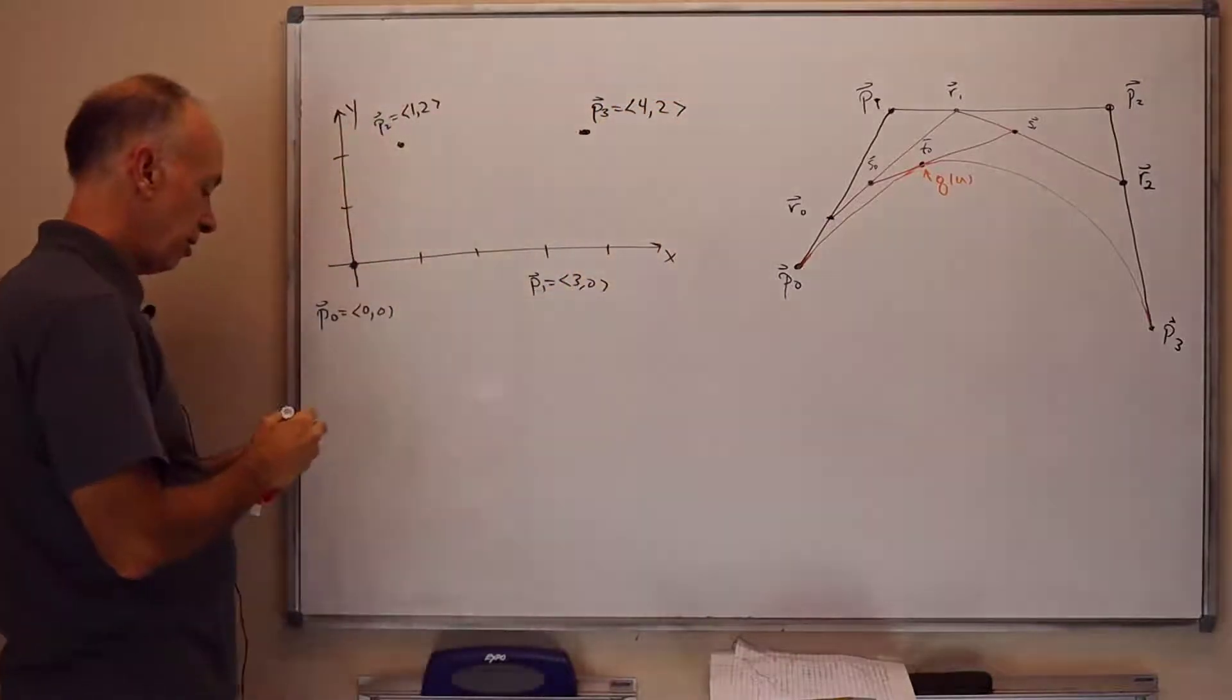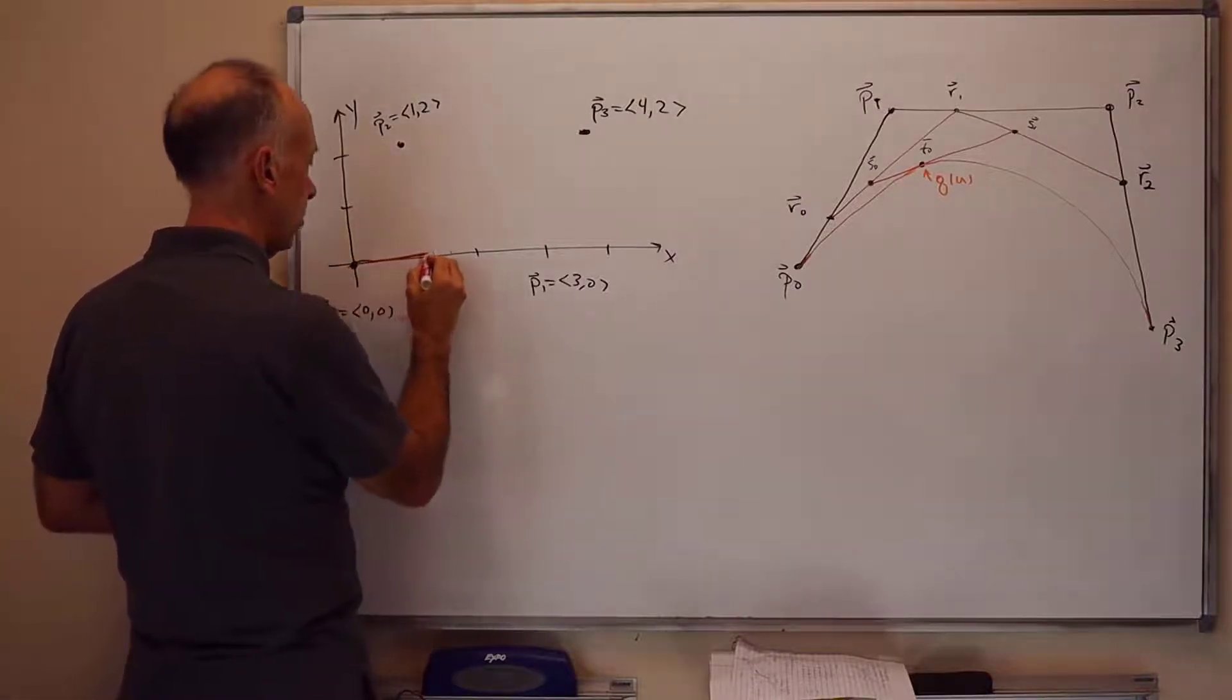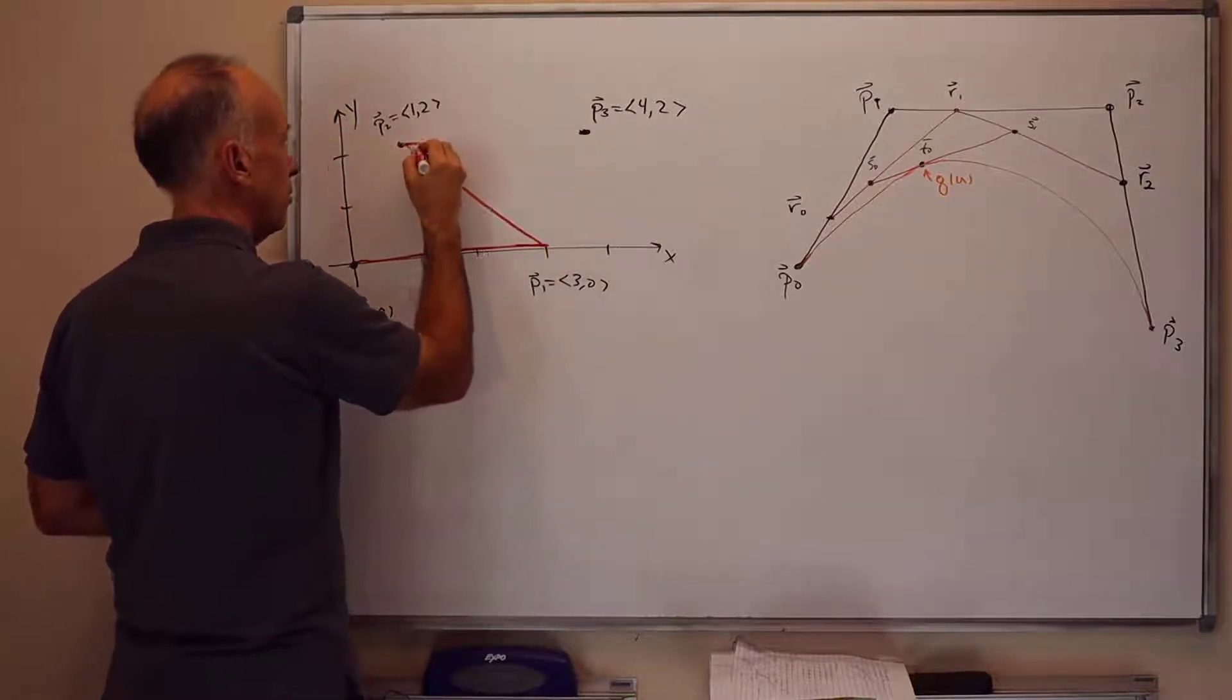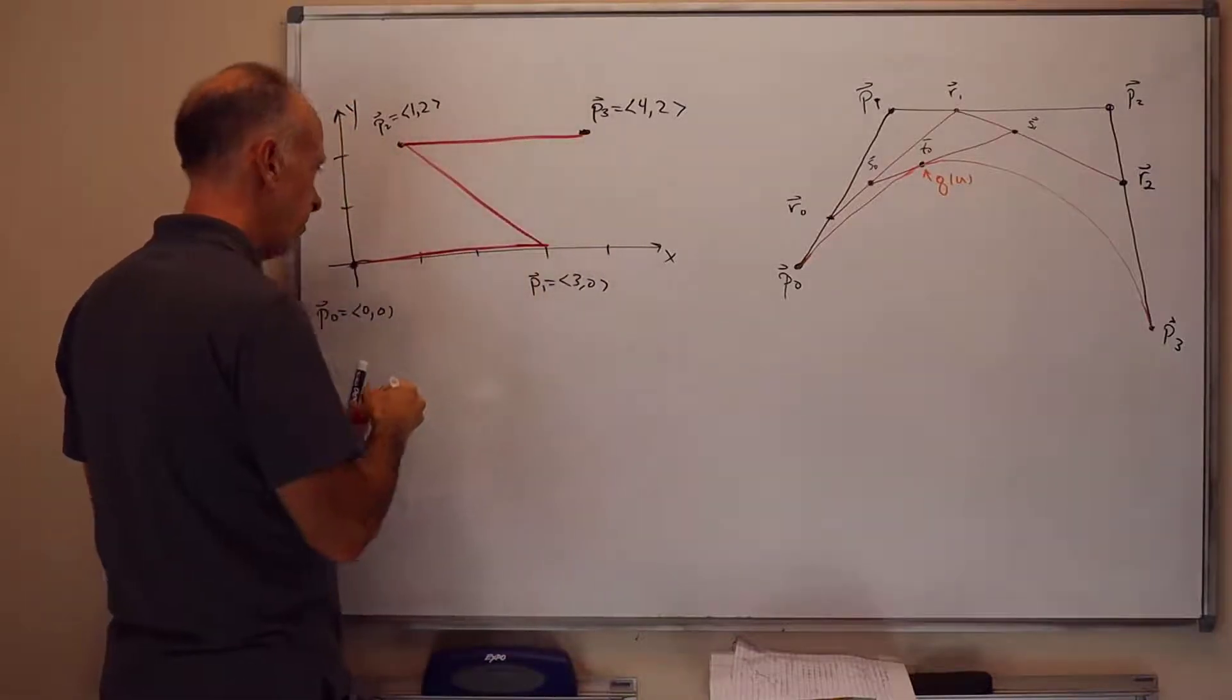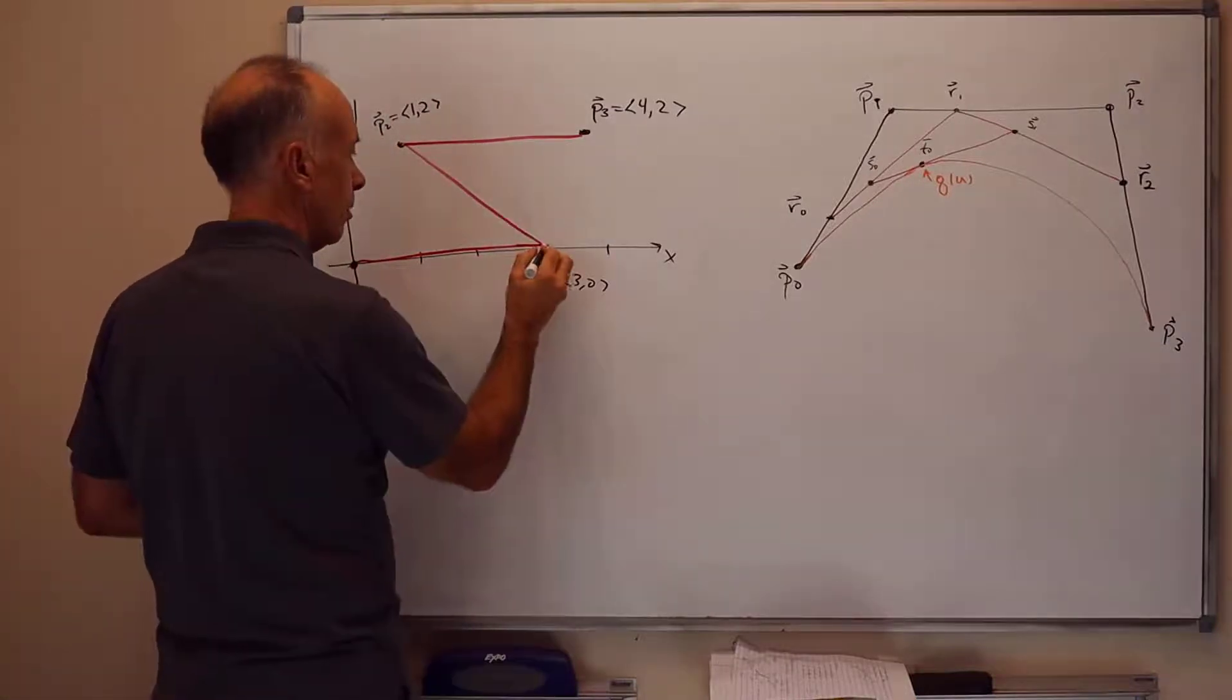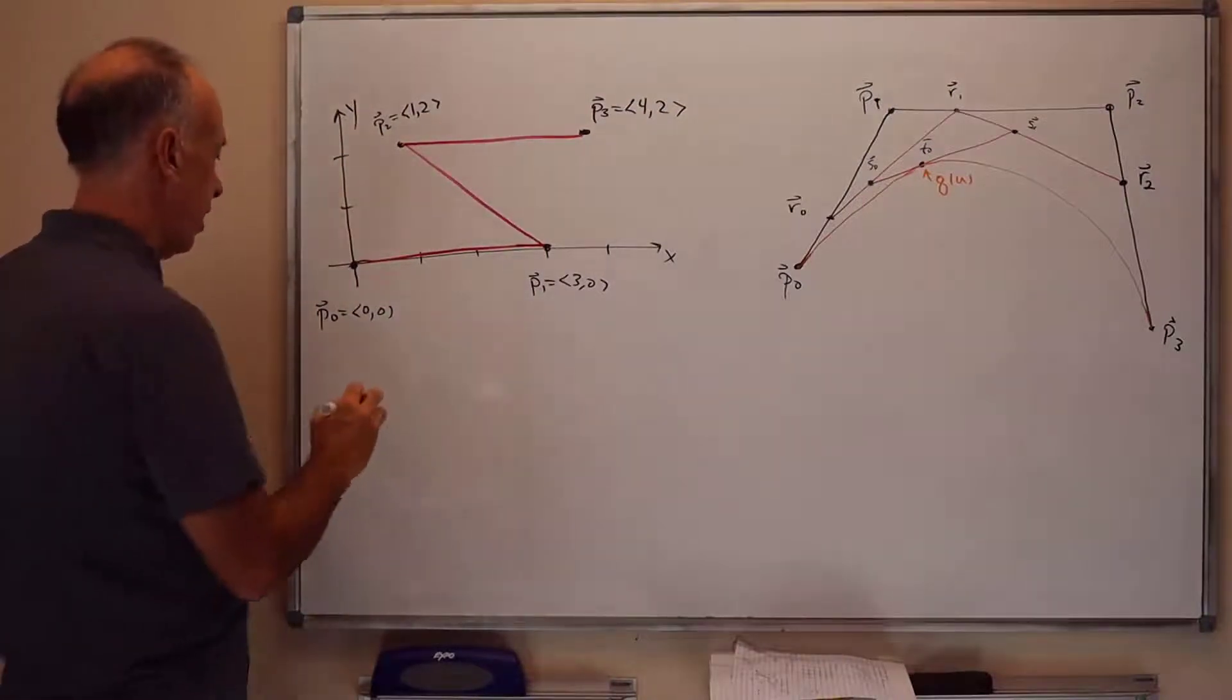I can draw the control polygon for this. And now we can do some computation. So now we're going to evaluate the curve with U equals 1 half.